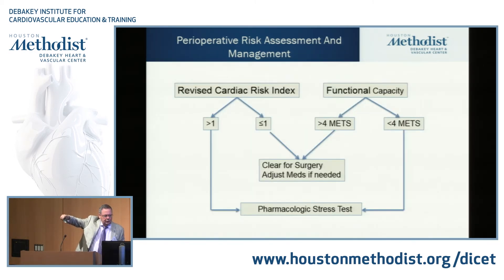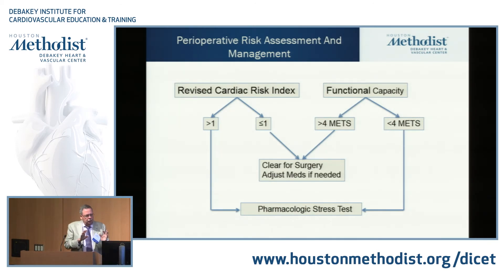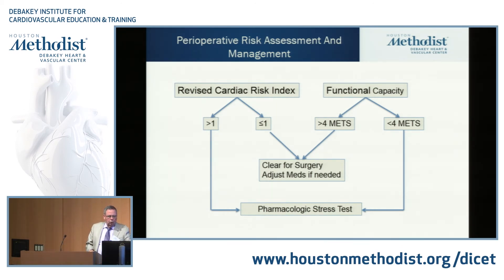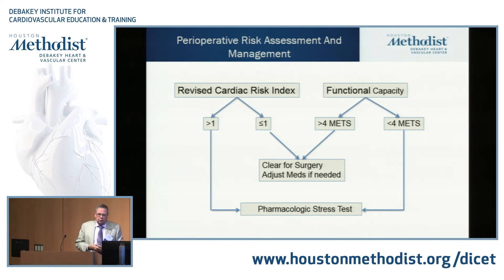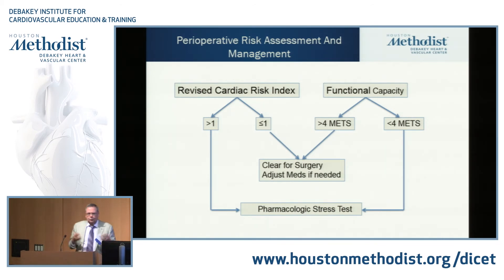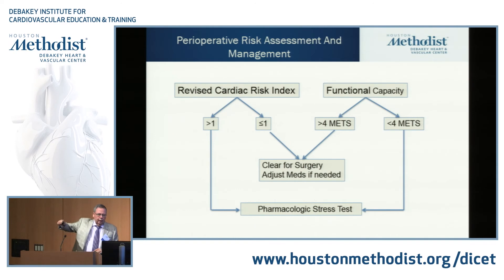Going back to that summary slide: if somebody appears to be higher risk — more than one point on the RCRI score and/or poor functional capacity — and they have risk factors from a CAD standpoint, a pharmacologic stress test would be indicated. Usually pharmacologic, because if they have low functional capacity they won't get to first base on a treadmill. That same slide we used before can guide us for when a nuclear stress test is needed.